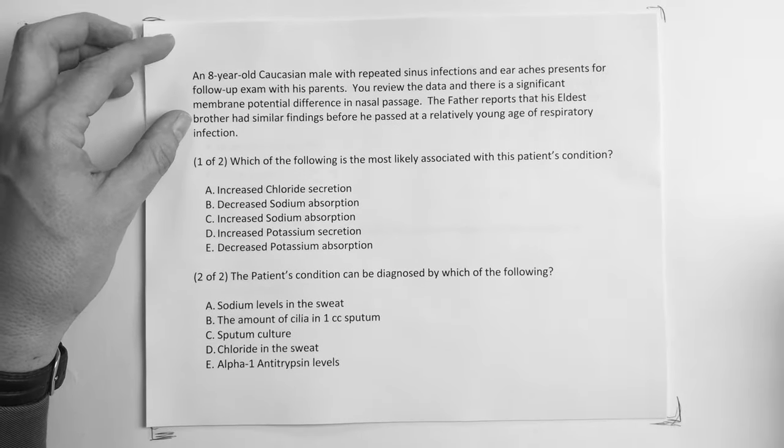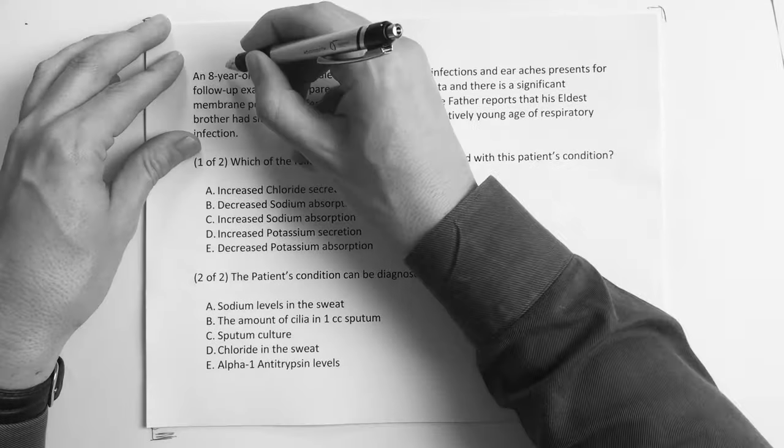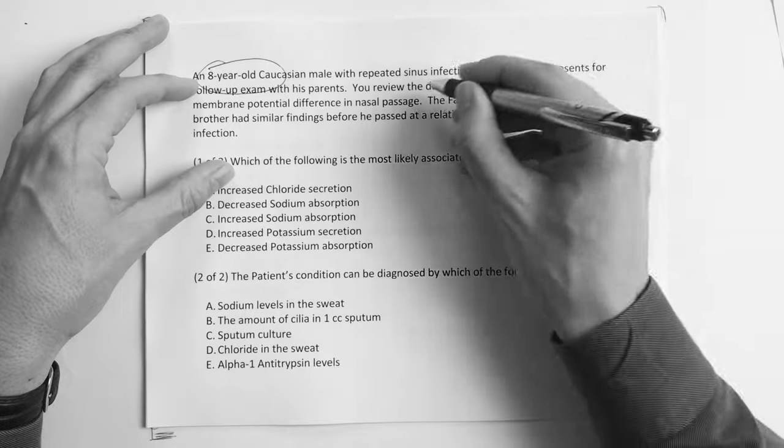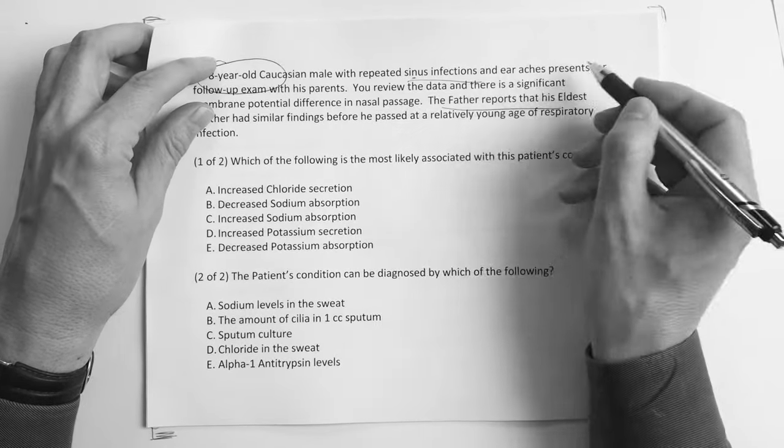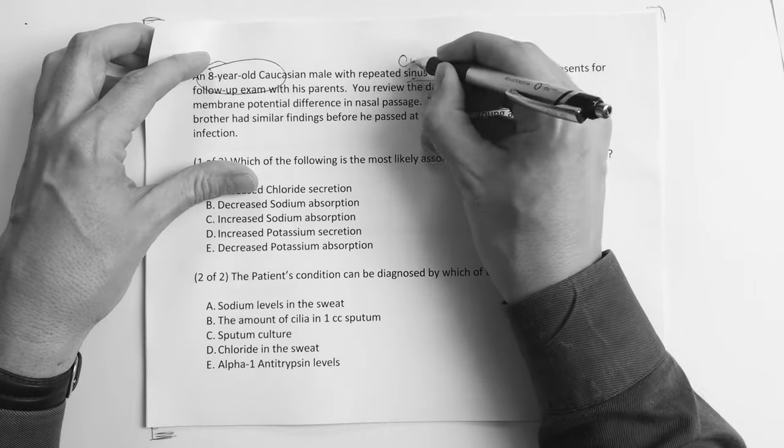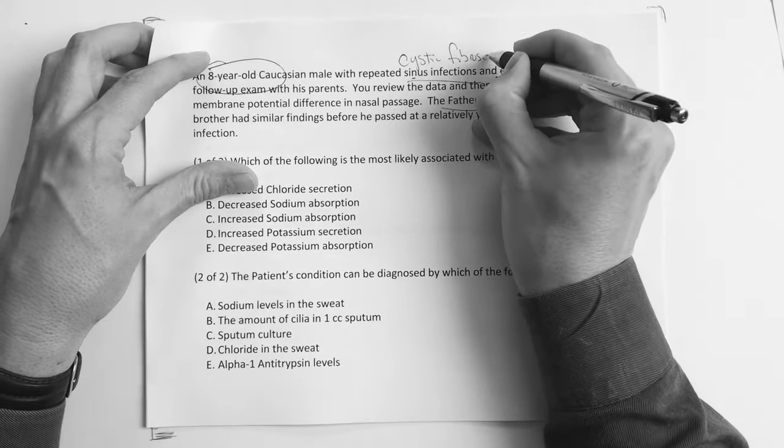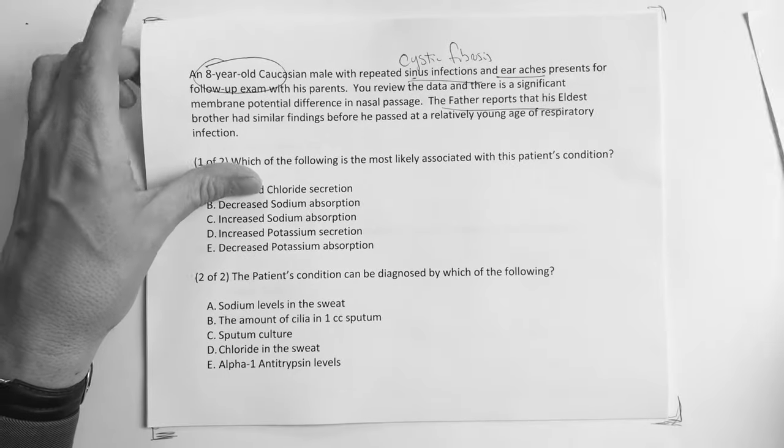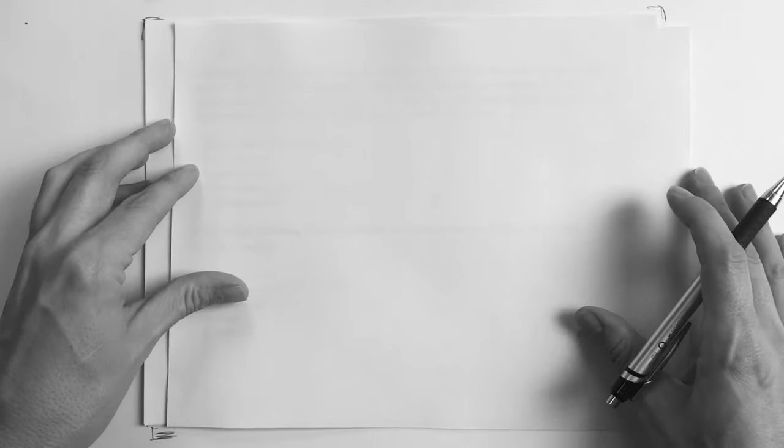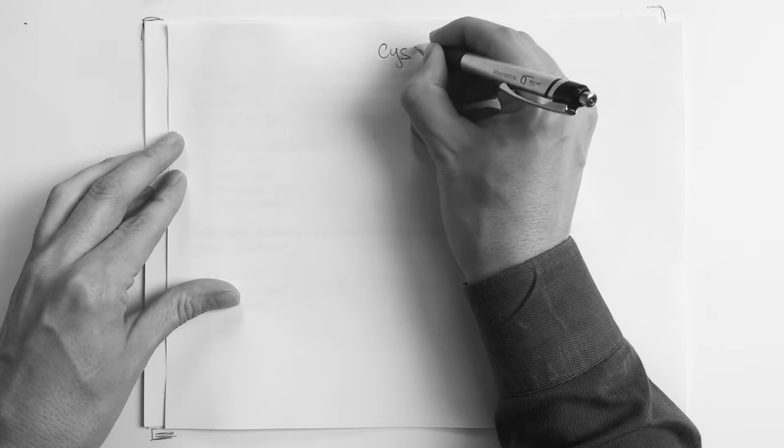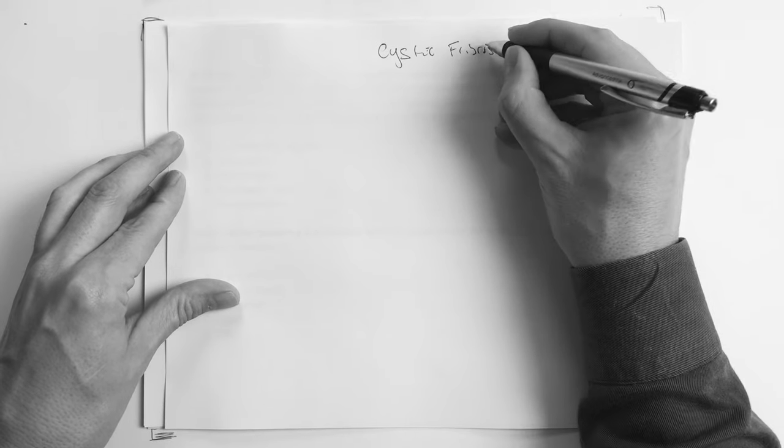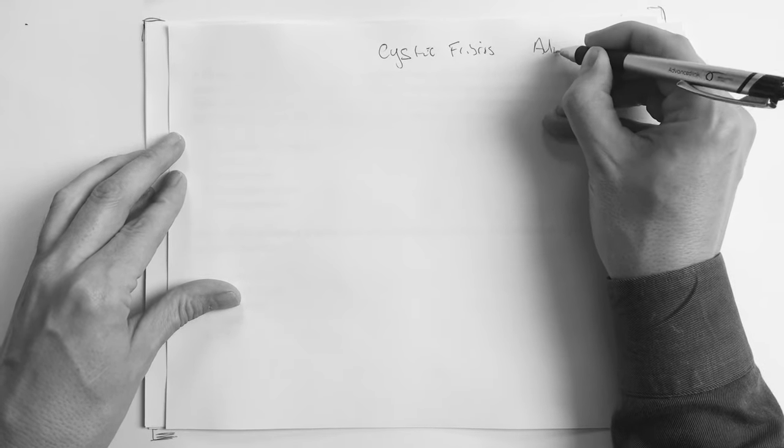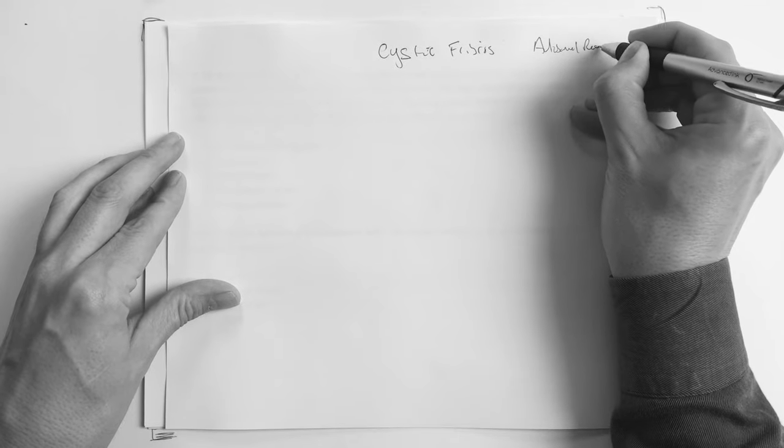You review the data and there is significant membrane potential difference in the nasal passage. The father reports that his eldest brother had similar findings before he passed at a relatively young age of respiratory infection. Which of the following is most likely associated with the patient's condition? You can tell it talks about chloride, sodium, absorption, secretion. So the key with cystic fibrosis, first of all, you know it's cystic fibrosis. It's an eight-year-old, there's some inherited genetic loading for it, recurrent sinus, earaches. You've got to be thinking cystic fibrosis.